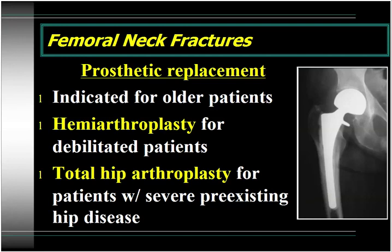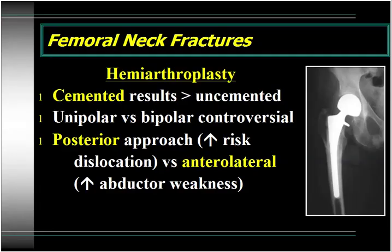Prosthetic replacement for femoral neck fractures is indicated for physiologically older patients with displaced fractures. In debilitated patients, a hemiarthroplasty is the treatment of choice. In patients with severe preexisting hip disease who are functional, you may consider a primary total hip replacement. The literature now supports that cemented hemiarthroplasty results are clearly superior to uncemented arthroplasty. The issue of unipolar versus bipolar is still quite controversial with no consensus. You can do your hemiarthroplasty through either a posterior approach or an anterolateral approach — the posterior approach has a higher risk of dislocation postoperatively, whereas the anterolateral approach is associated with higher problems with abductor weakness.